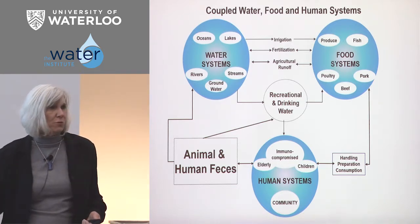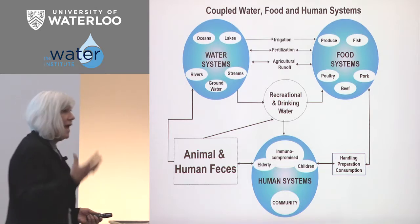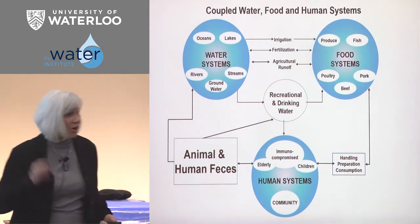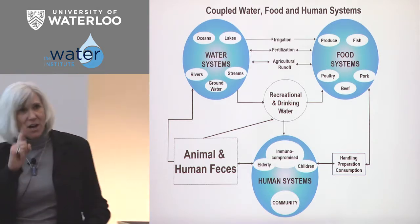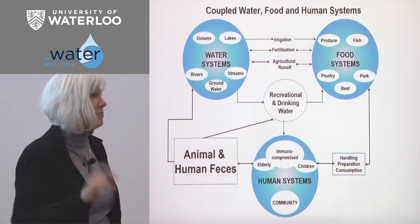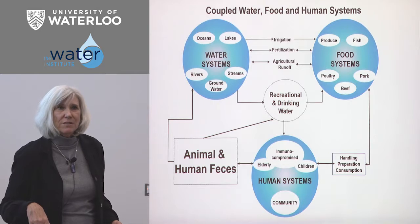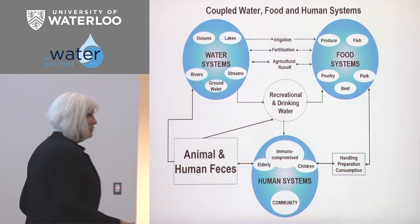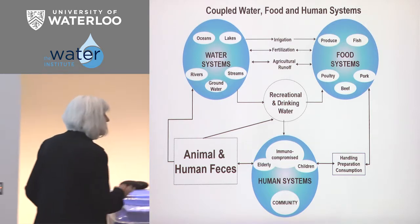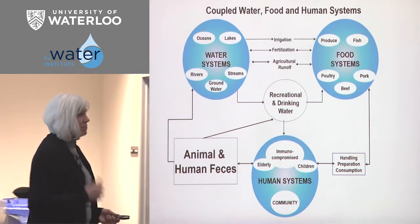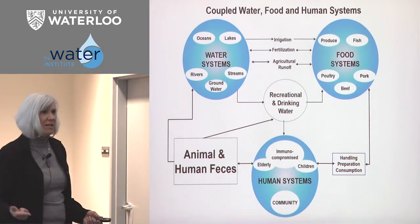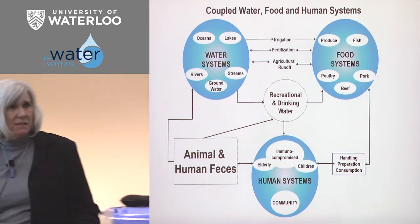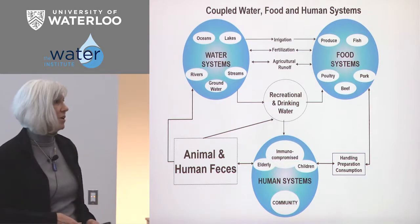Our social structures are changing. Our sensitive populations — at any given snapshot of any community, 25% of our population is in a sensitive subgroup: immunocompromised, pregnant, young children, elderly, diabetics. All of us are going to go through one of those subgroups at one point in our lives, but at any snapshot that means 25% of the population is vulnerable. And these individuals are growing in our culture.